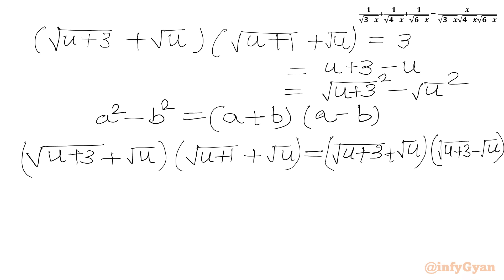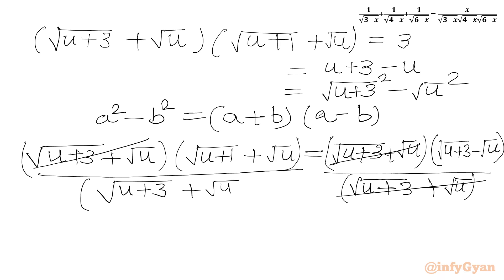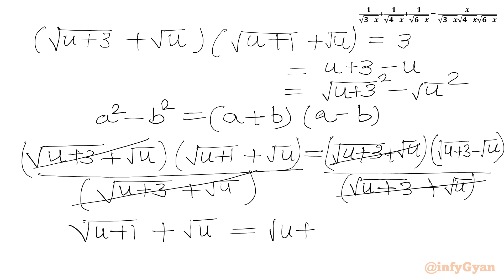Now we divide both sides by (square root (u plus 3) plus square root u). In the RHS also we divide by (square root (u plus 3) plus square root u). So we cancel these two terms. The sum of two square roots cannot be 0, so we can divide. Now we have (square root (u plus 1) plus square root u) in the LHS and (square root (u plus 3) minus square root u) in the RHS.